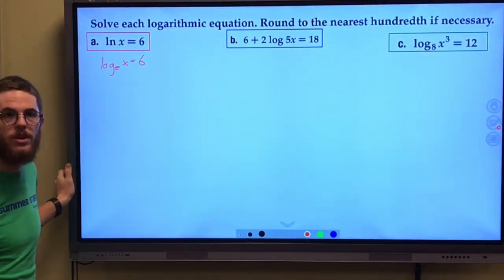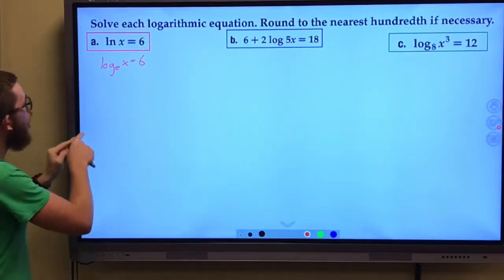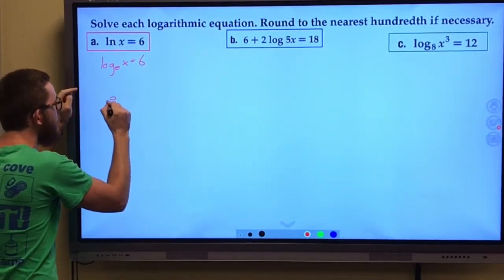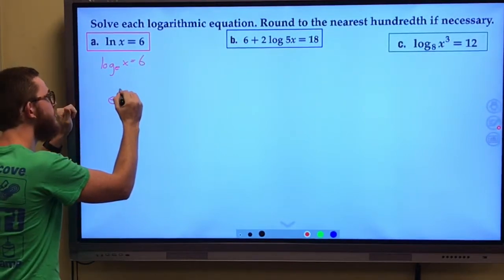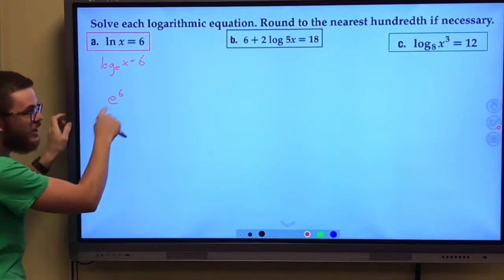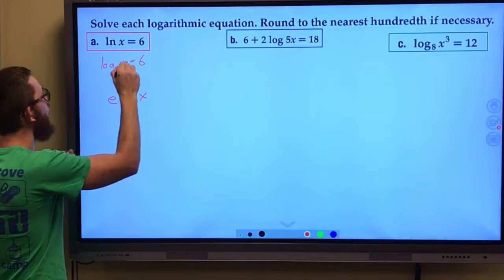One thing that really helps me is a log is an exponent. So log base e, the base to my exponent is e, it equals 6. A log is an exponent, so the exponent to the base is 6, and this must equal x.